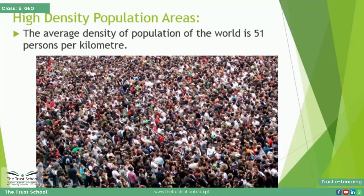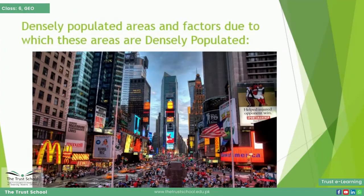According to density, we can divide the world into three regions. The first one is high density population areas. The world's average population density is 51 persons per square kilometer. Now we will discuss densely populated areas and the factors due to which these areas are densely populated, one by one.